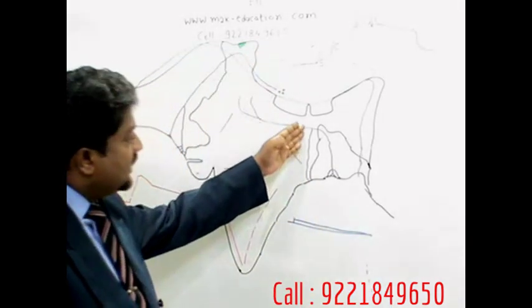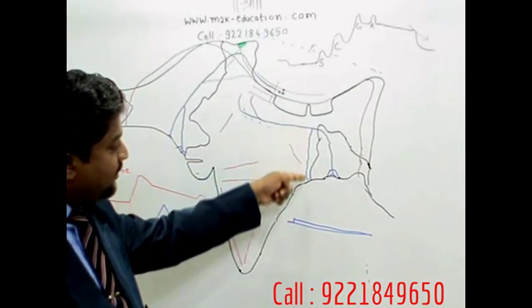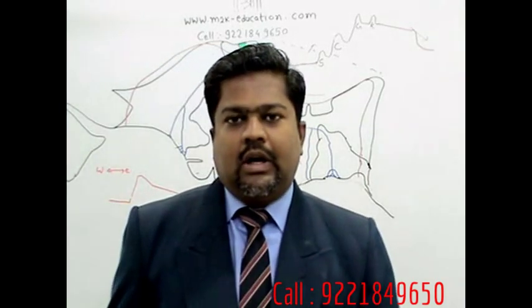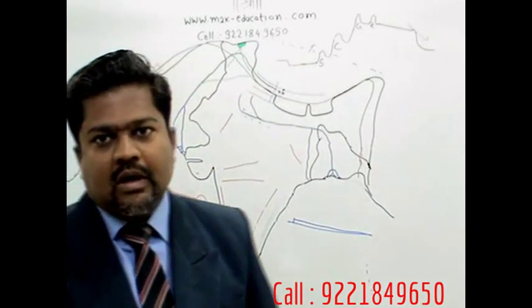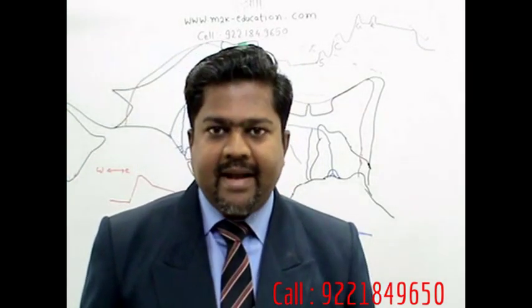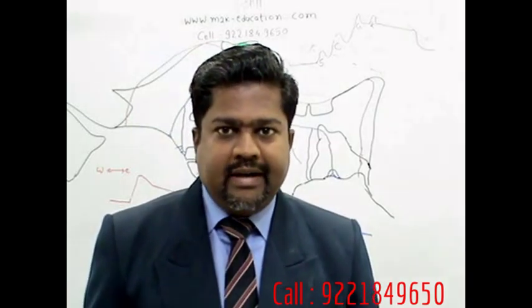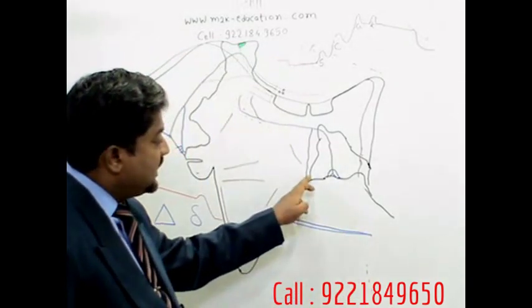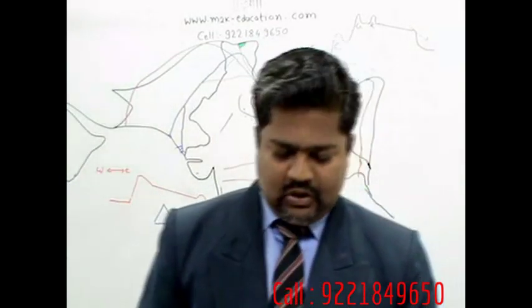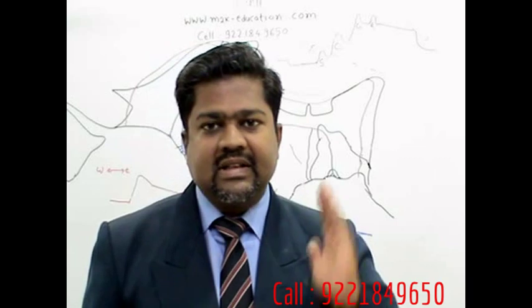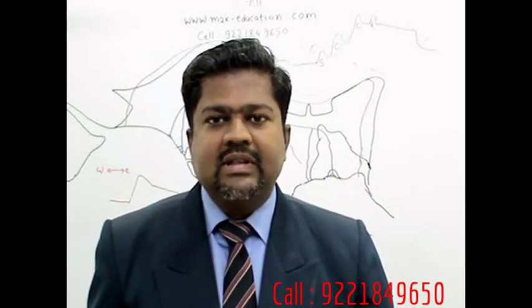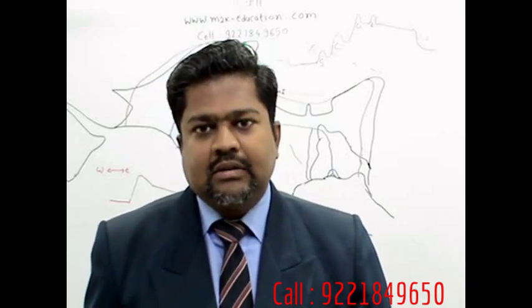Now here onward we are having distributary. One of the important distributary of river Ganga, that is called as river Hooghly. The famous Kolkata or Calcutta, that is there on bank of river Hooghly. It is not exactly on coastal line but just close to coastal line. The Kolkata or Calcutta city is there on bank of river Hooghly. So this is distributary of river Ganga.